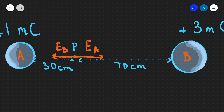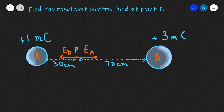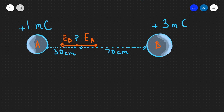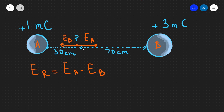We're going to call this EB. The size of the arrows is unknown at the moment — I just wanted to visualize this in terms of its direction. Now, the resultant electric field — I'm just going to call that ER — you can clearly see will be found by the difference of those two electric fields. In other words, this will be EA minus EB. The reason I'm taking those away is because they're pointing in two different directions.